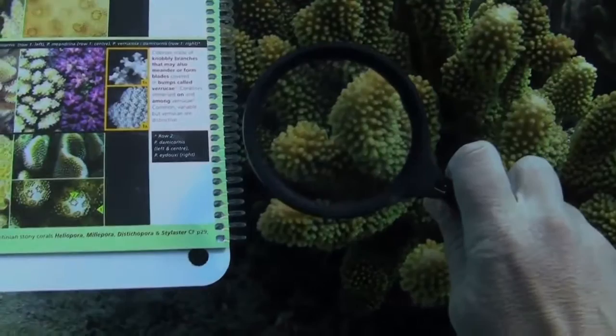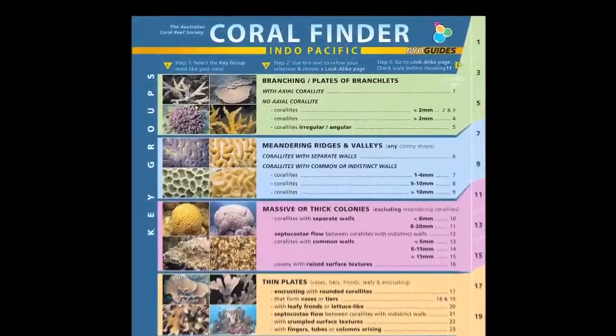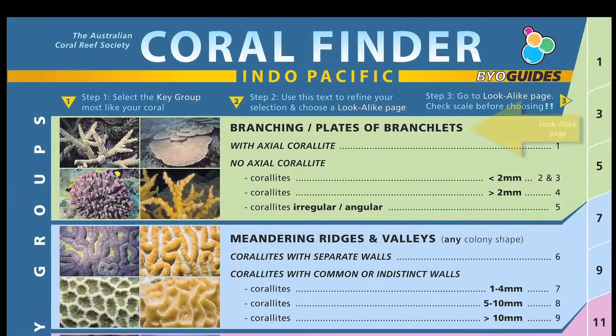Now that we know the basic anatomy of a coral, we need to know the anatomy of the Coral Finder itself. The front page is known as the Key Page. It classifies the world of hard corals by shape, form, texture and life habit. The Key Page contains key groups, all of which are simple visual concepts.